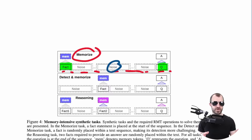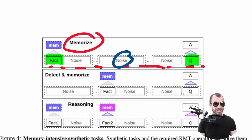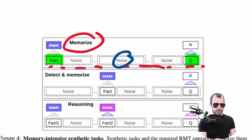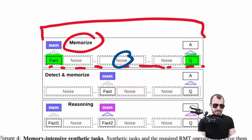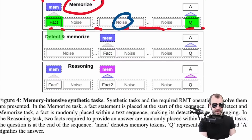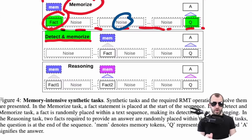This is in essence a sequence classification task into a preset vocabulary. If the sequence was shorter than 512 tokens, you could just feed it into BERT. However, if it's longer than the BERT context size, then you need to use a few tricks. In the memorize task you're guaranteed the fact is always in the first segment. In the detect and memorize task, the fact could be anywhere, so you also have to detect where that fact is in any of the segments and then answer at the end.